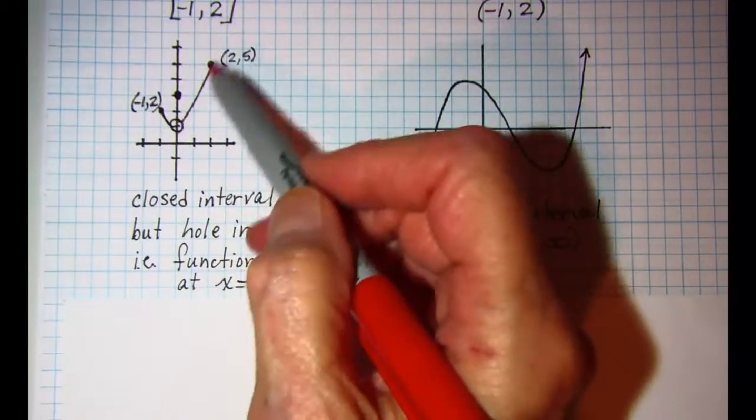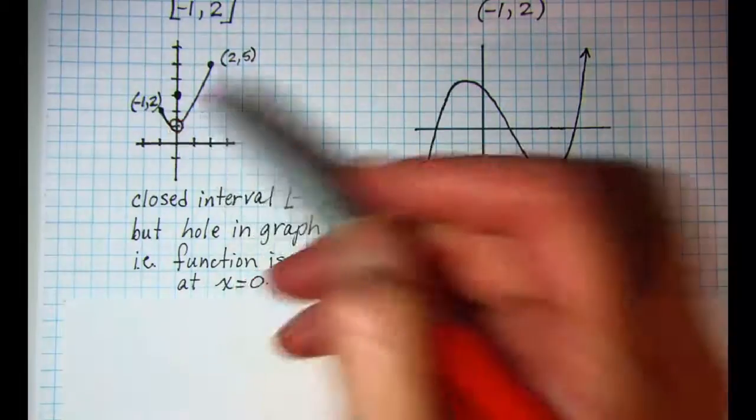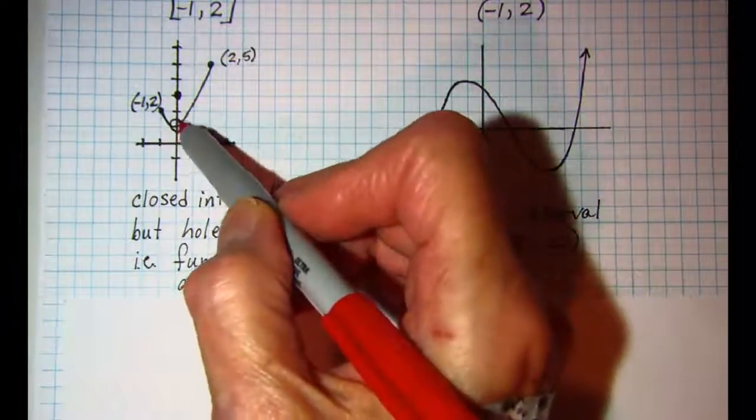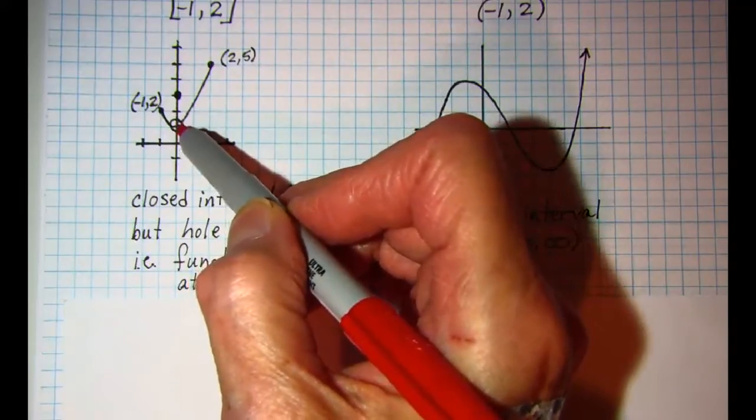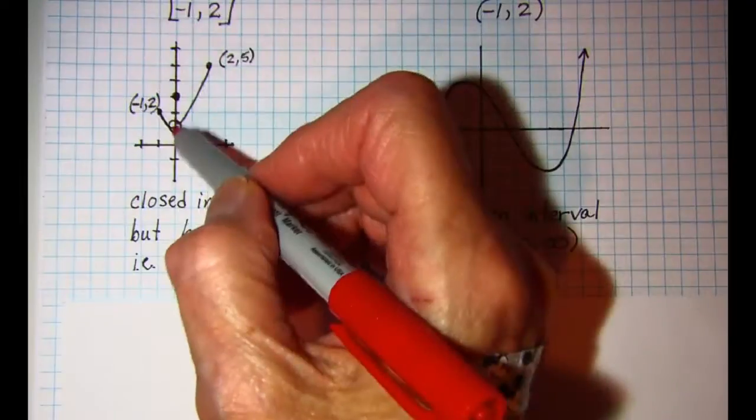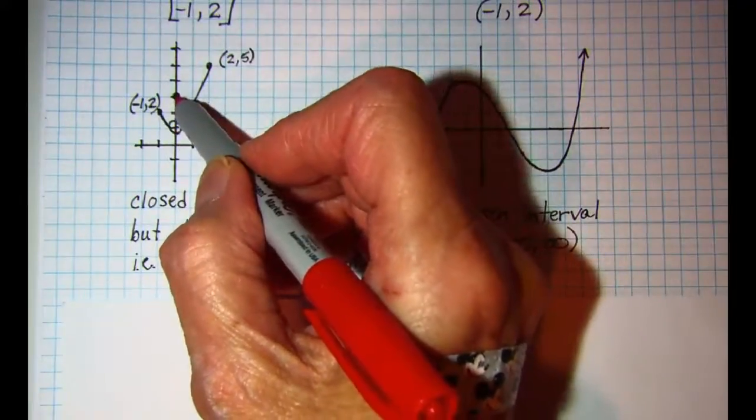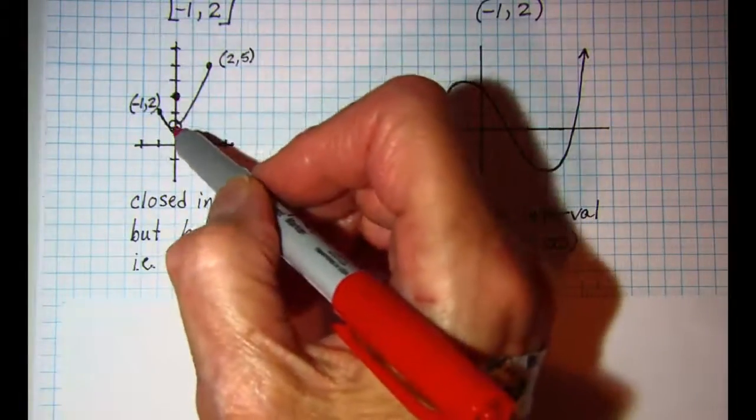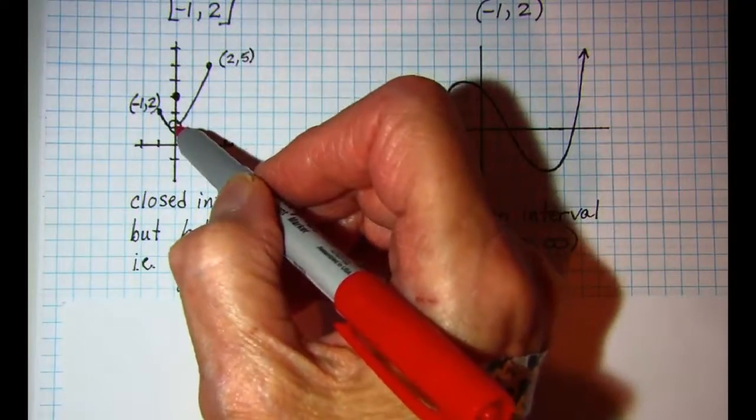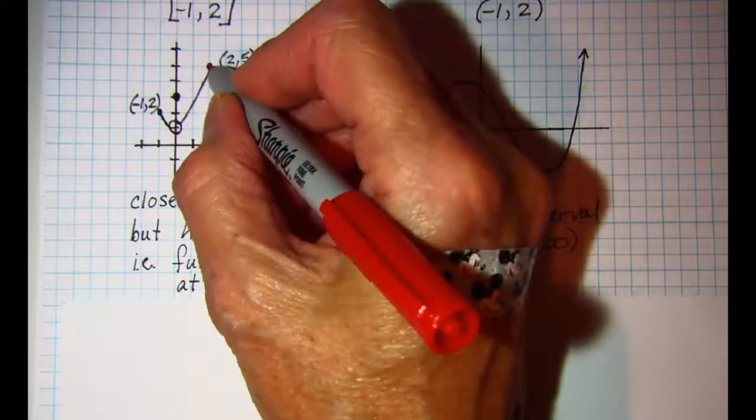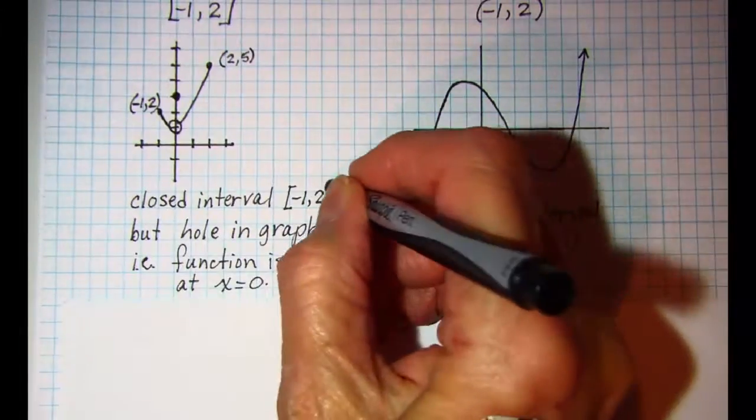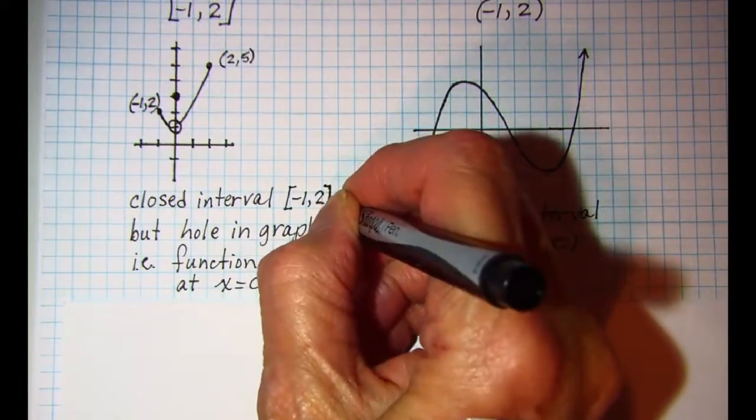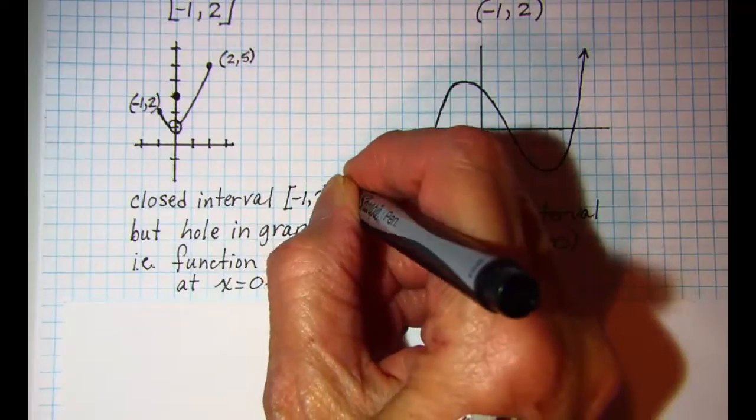On this one, same curve y equals x squared plus one, but we have a hole in the graph at x equals zero, and we have that point plotted up here at the (0,3). So this would I guess be a piecewise defined function. But we can see that this point is included because we do have a closed interval. This should be closed here.